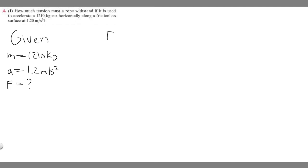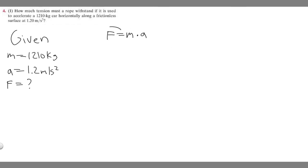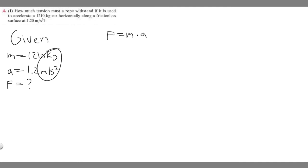We know force is equal to mass times acceleration — F = ma — and you have to memorize this formula. Force is measured in newtons, mass must be in kilograms, and acceleration in meters per second squared. If they're given in different units you have to convert, but here both values are already in the correct units.